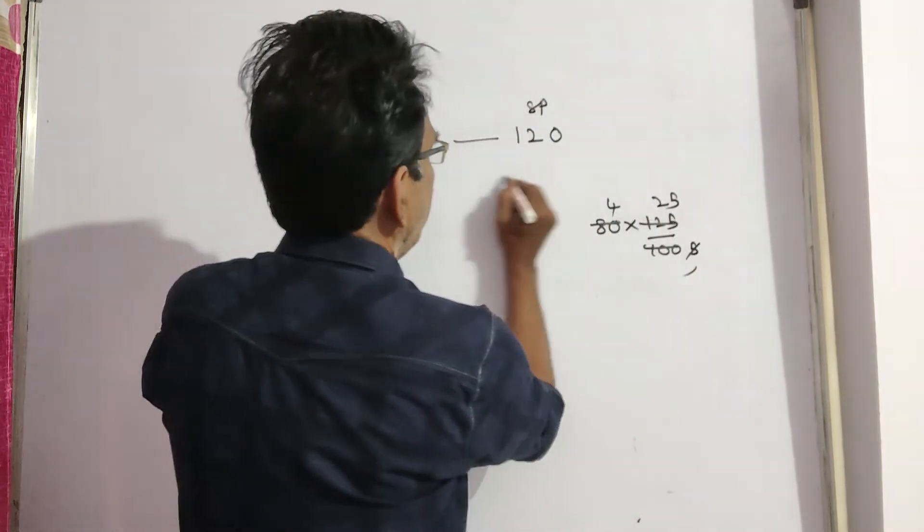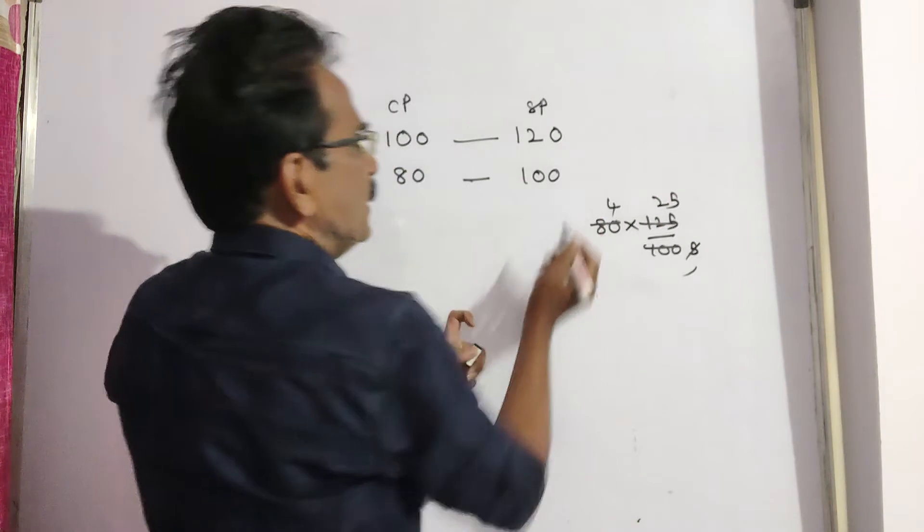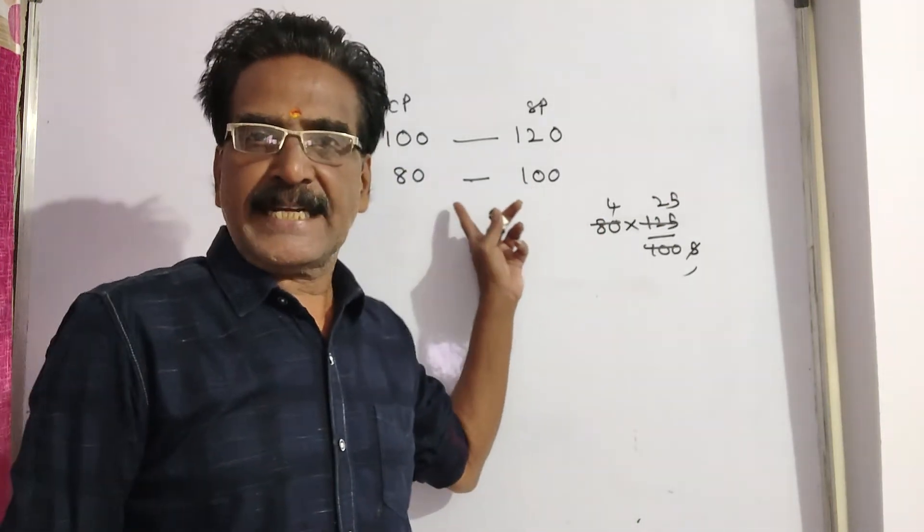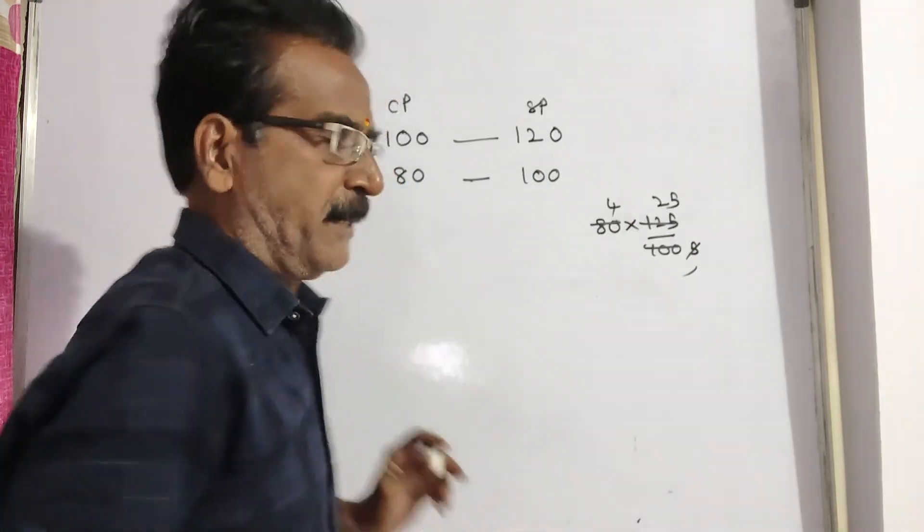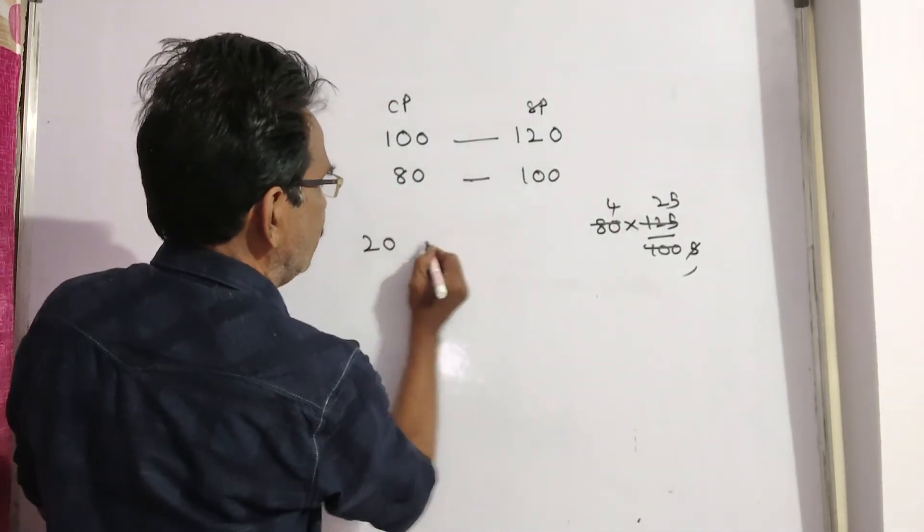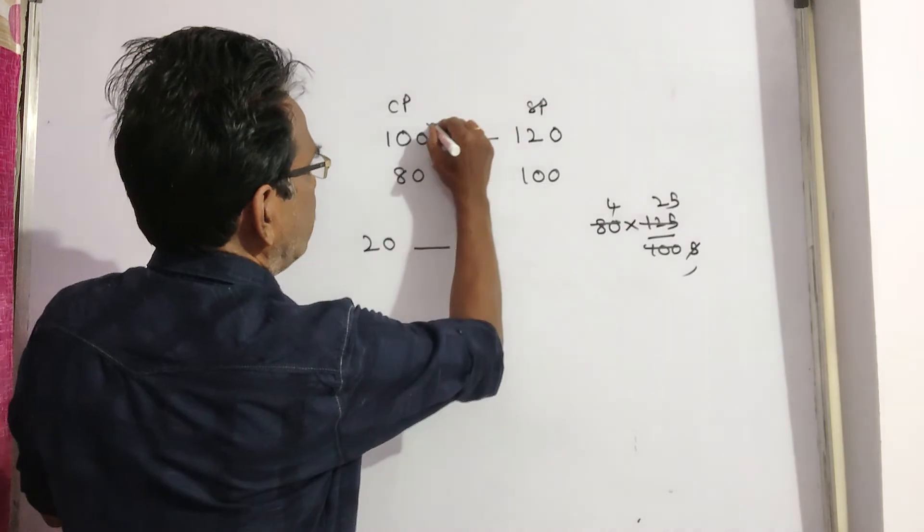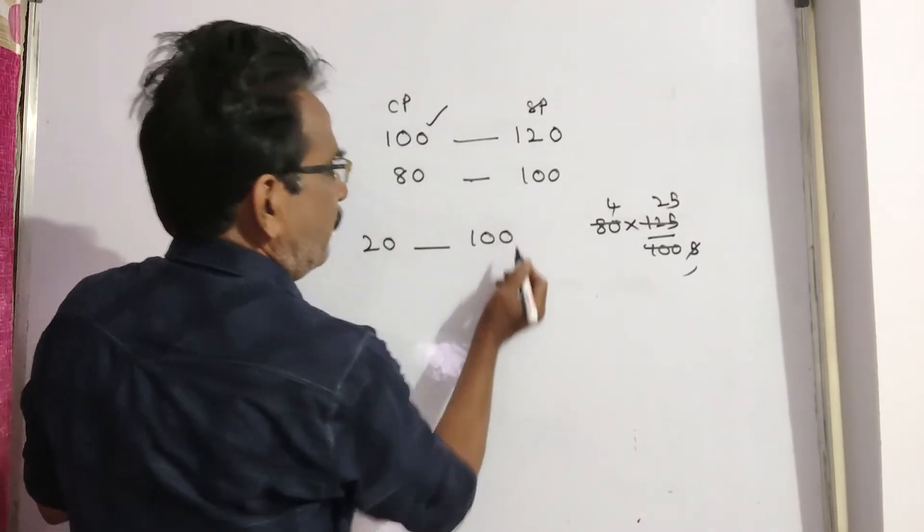The second sold price is 20 rupees less than the original sold price. If 20 rupees less than the original sold price, then the cost price is 100. But in the problem it is said that the second sold price is 180 rupees less.